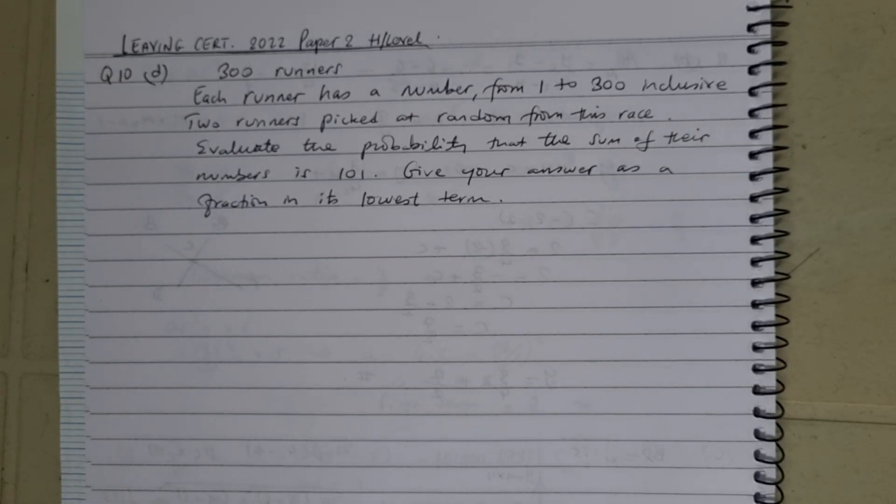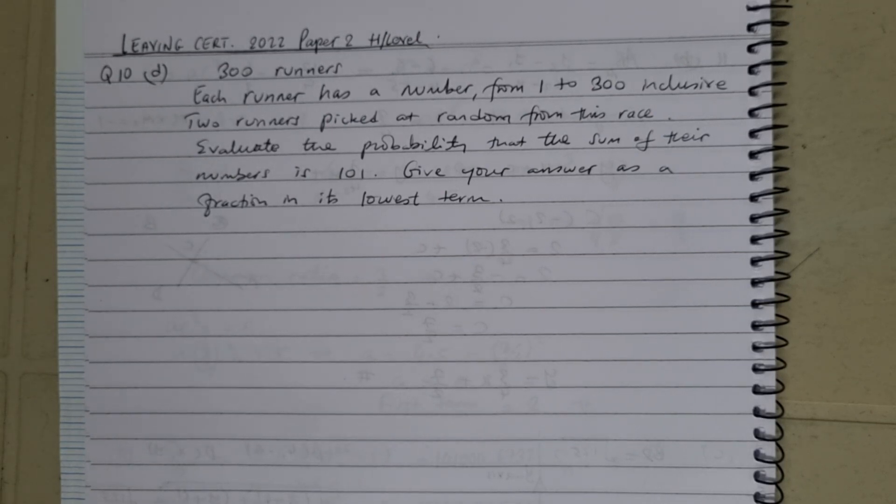Now for question number 10 part D of the leaving certificate, we've got 300 runners that take part in a road race, and each runner has a number from 1 to 300 inclusive. No two runners have the same number. Two runners are picked at random from the race, and we need to work out the probability that the sum of their numbers is 101.